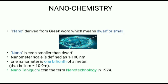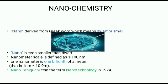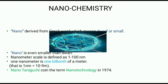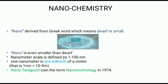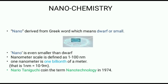Nano is derived from the Greek word which means dwarf or small. Nano is even smaller than a dwarf. The nanometer scale is defined as 1 to 100 nanometers. One nanometer is one billionth of a meter, technically referred to as 10⁻⁹ meters.